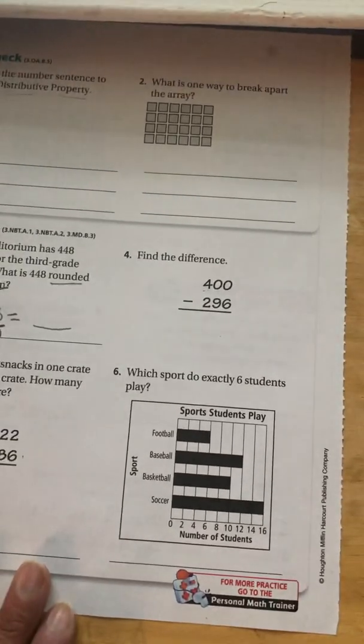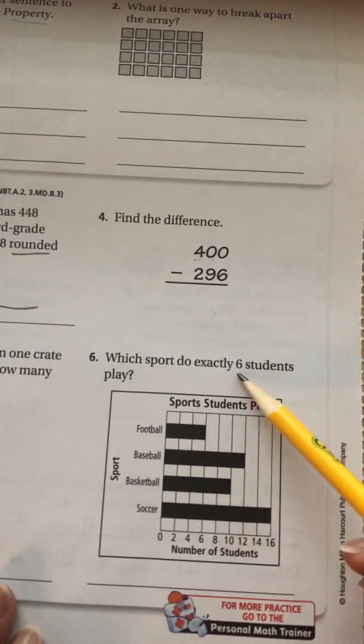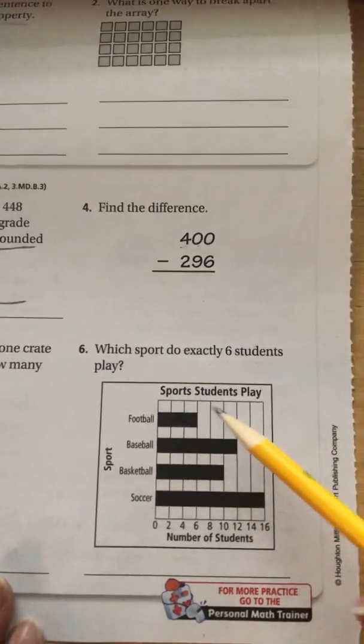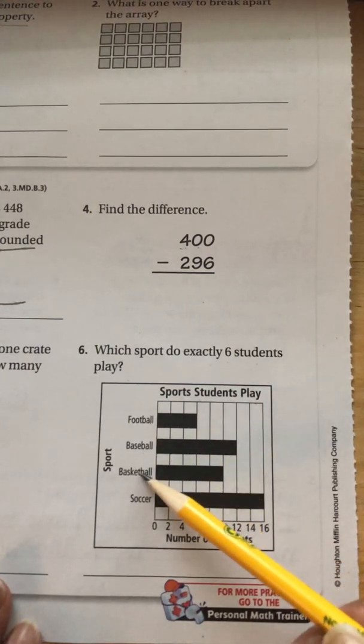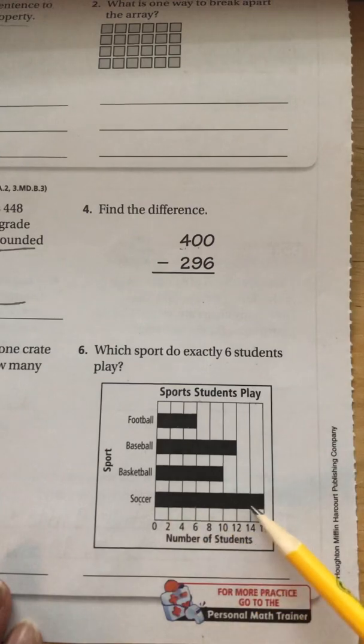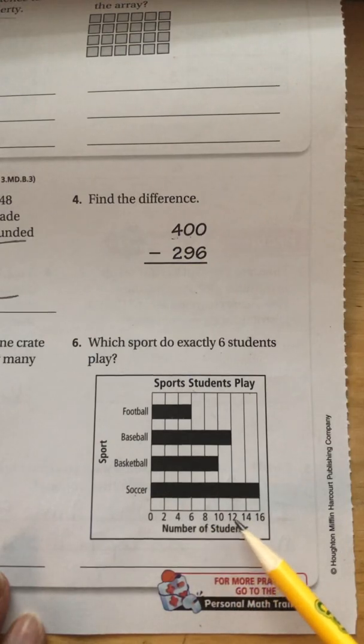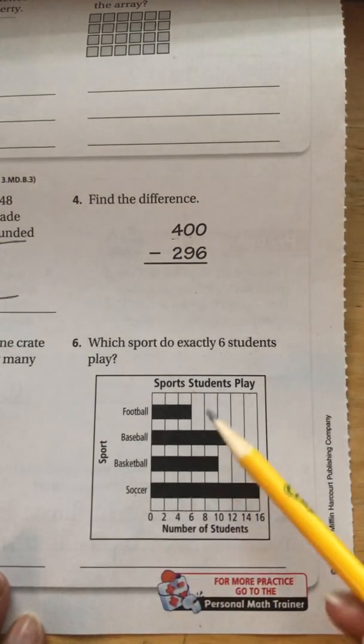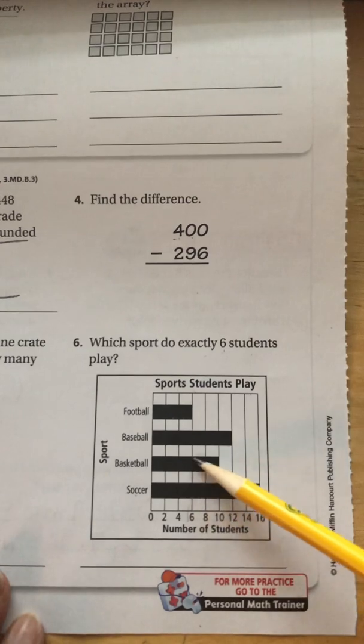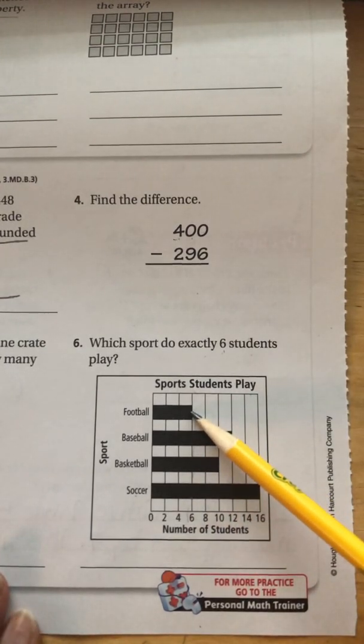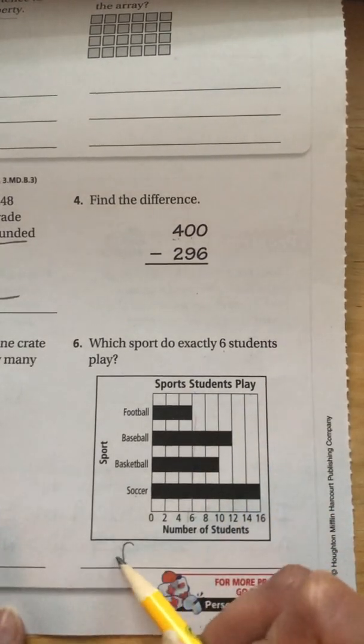I'll do number 6. It says, which sport do exactly 6 students play? Here you've got sports that students play: football, baseball, basketball, and soccer. You have the bars going across and the numbers at the bottom that tell you the length of each bar. Which bar represents 6 students who play that sport? If I look at the number 6 and I go up, it's football because that's where the bar for football stops. So my answer is football.